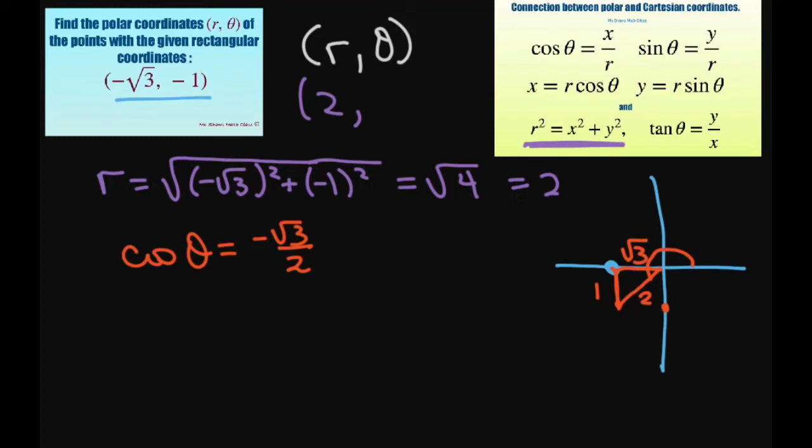And that's going to give you theta equals 7 pi over 6, or you can just add pi over 6 to pi.